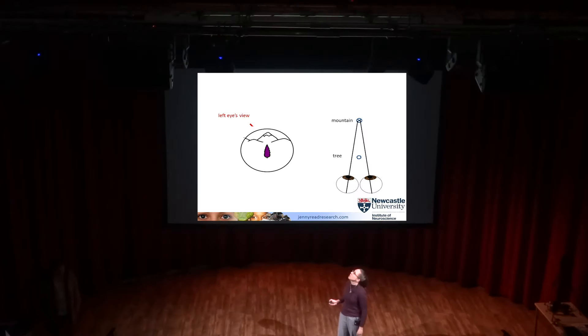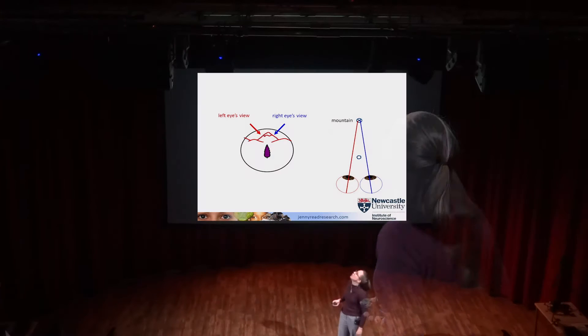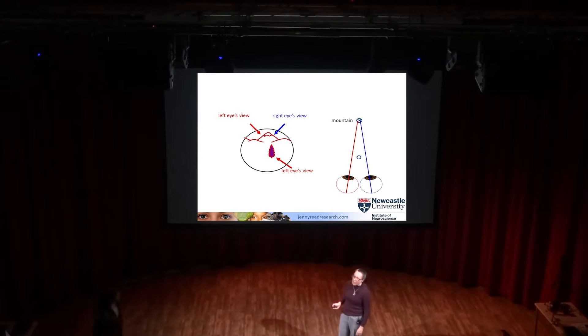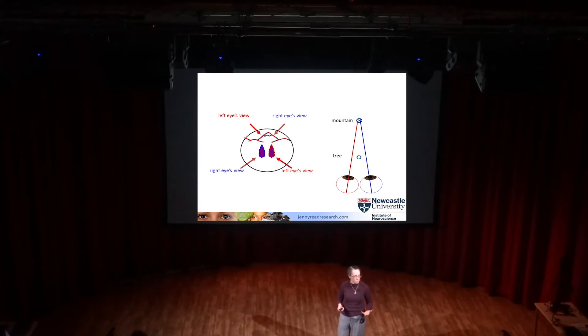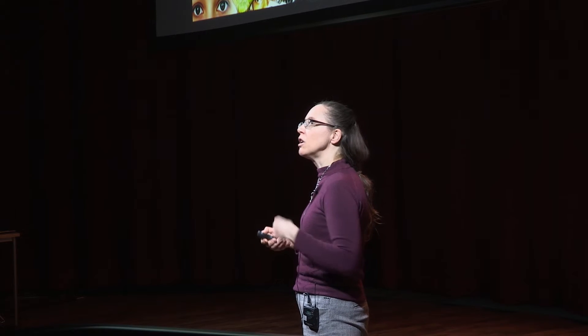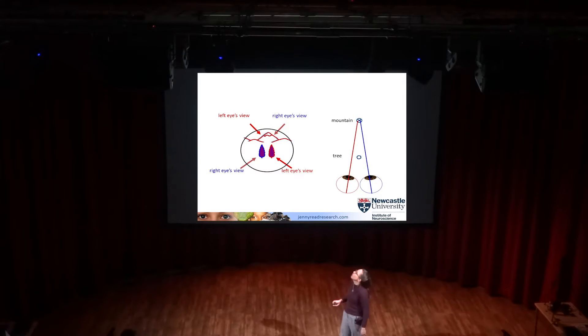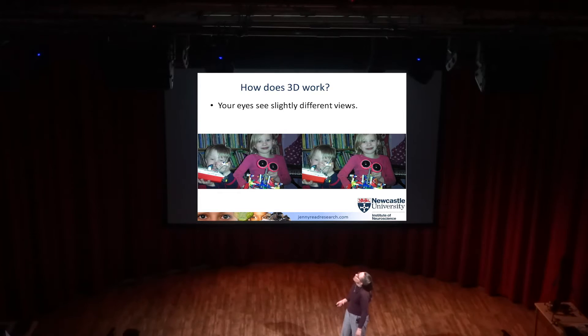For example, if you're looking at a distant mountain, by definition it's falling at the same point in your left and right eye. But if there's a tree in front of that mountain, the tree is actually to the right of the mountain in the left eye's view, but to the left of the mountain in the right eye's view. You've got this disparity between the two eyes' images, and your brain is able to pick that up and use that information to tell you about the distance of different objects.